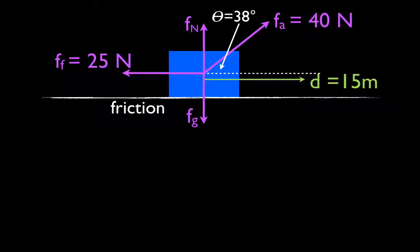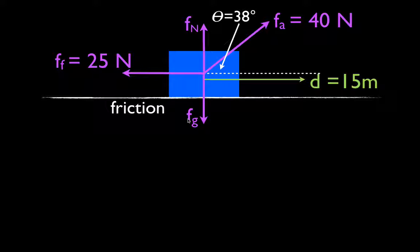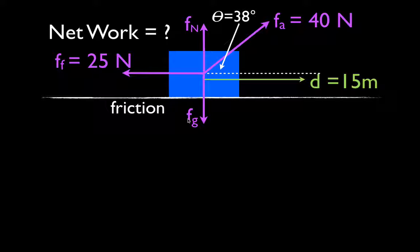You can see in this diagram we have four forces. You should notice that the applied force of 40 newtons is not parallel to the displacement. It is at an angle of 38 degrees above the horizontal. Then we have a friction force acting in the opposite direction of 25 newtons, and we have a normal force and a gravitational force. So let's go ahead and calculate the net work done on the object by those four forces.